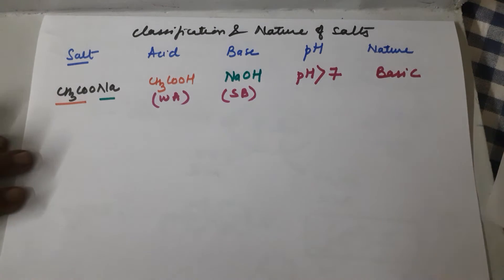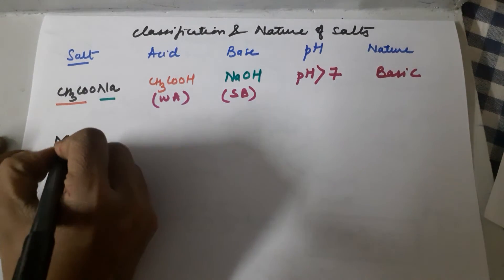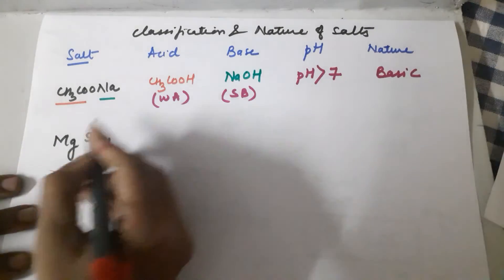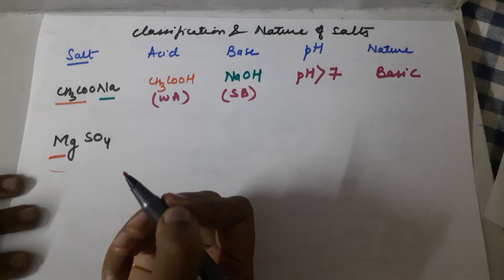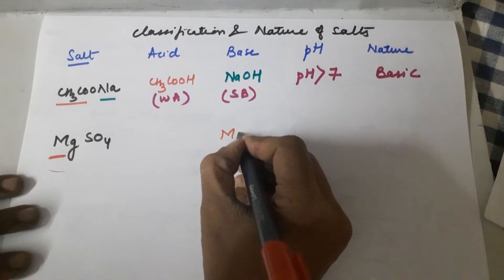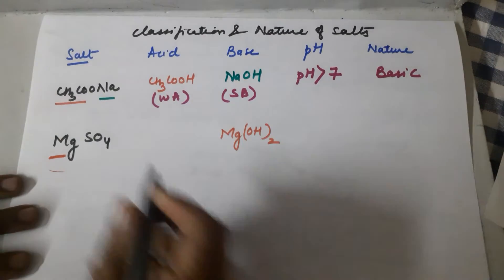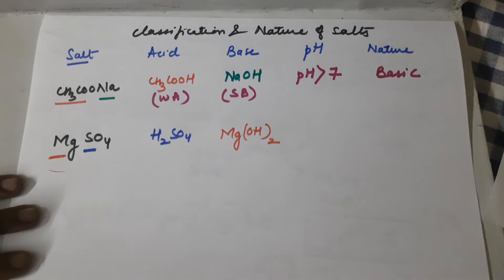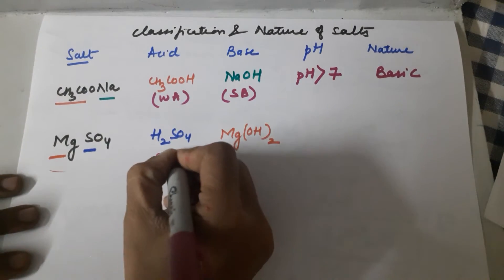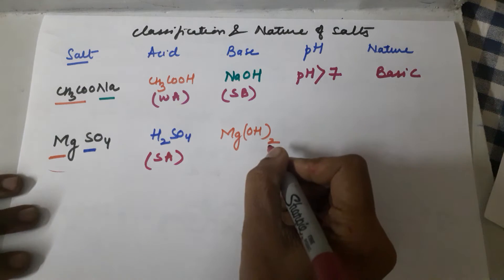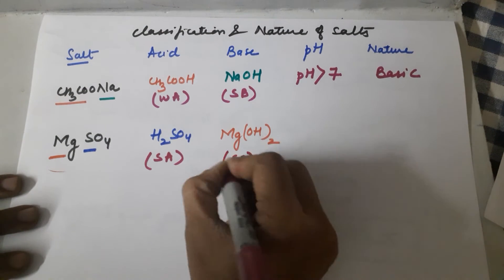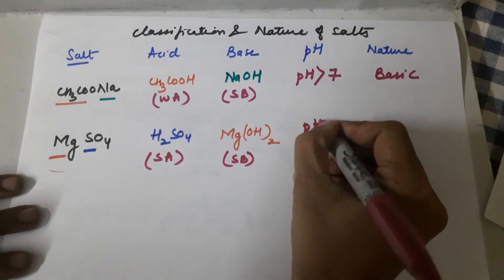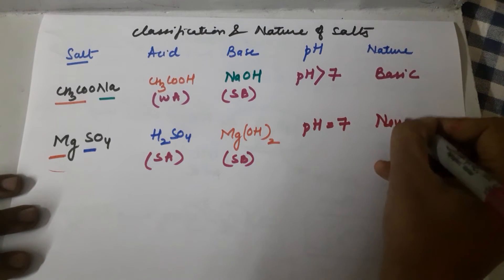The second salt is magnesium sulfate, MgSO₄. To find the base: add OH⁻ to Mg²⁺ to get Mg(OH)₂. For the acid: add H⁺ to SO₄²⁻ to get H₂SO₄. H₂SO₄ is a very strong acid and Mg(OH)₂ is also a strong base. When a strong acid and a strong base combine, they neutralize each other completely, so the pH is 7 and the salt is neutral.